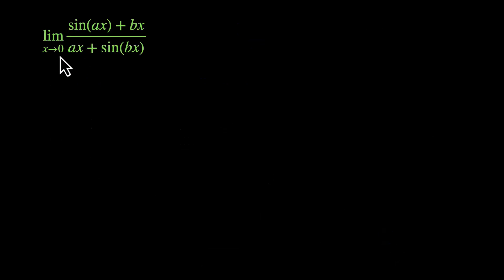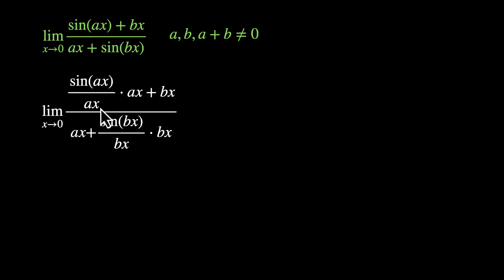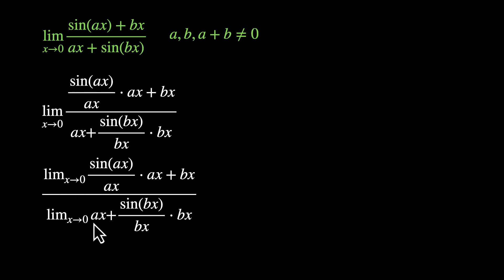Next: limit x approaches 0, (sin(ax) + bx) / (ax + sin(bx)), where a, b, and a+b are all not equal to 0. Wherever we see sin, we need the angle inside it in the denominator. So in the numerator: sin(ax)/ax times ax + bx; in the denominator: ax + sin(bx)/bx times bx. In spreading the limit, we have limit in numerator and denominator, spreading further. This part, sin(ax)/ax, becomes 1; and sin(bx)/bx also becomes 1. In the numerator we'll have ax + bx, and in the denominator ax + bx.